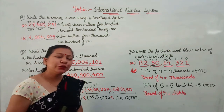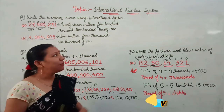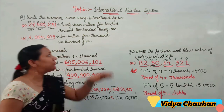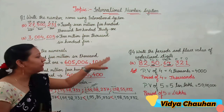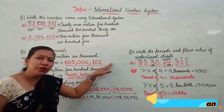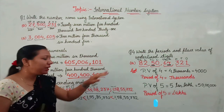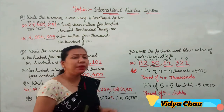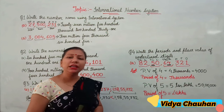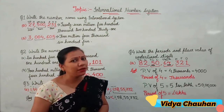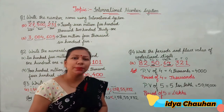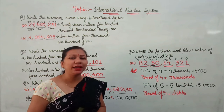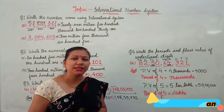So today we have discussed numbers in the international number system. We learned how to write number names, how to write numerals for given number names, ascending and descending order, and also the place value and period for any underlined or circled digit in a given number. I hope today's lesson is clear to all of you. Thank you, students. Have a great day.